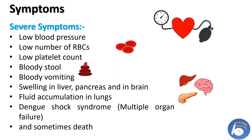Severe symptoms include lower blood pressure, low number of red blood cells, low number of platelets, bloody stool, bloody vomiting, swelling in the liver, pancreas, and brain, and fluid accumulation in the lungs. There is also dengue shock syndrome, which can cause multiple organ failure and sometimes death.